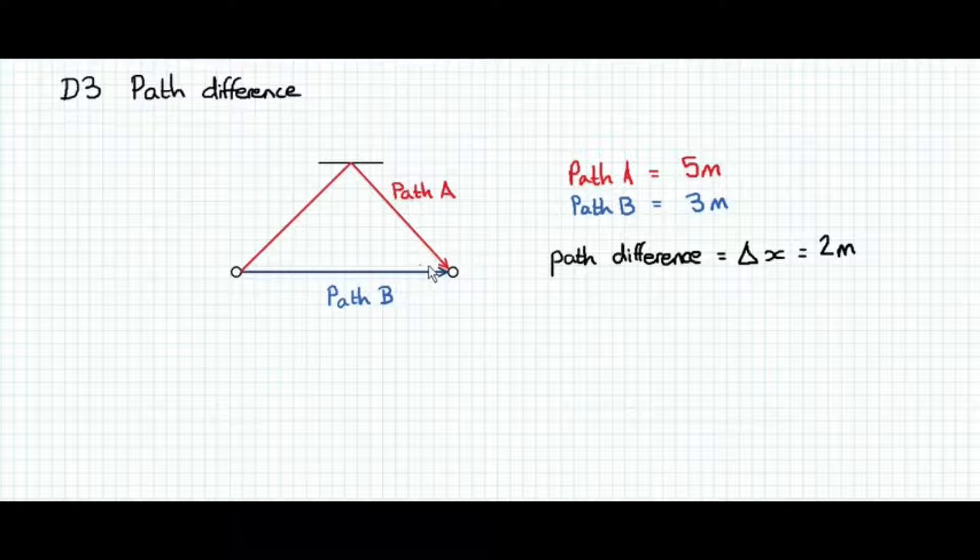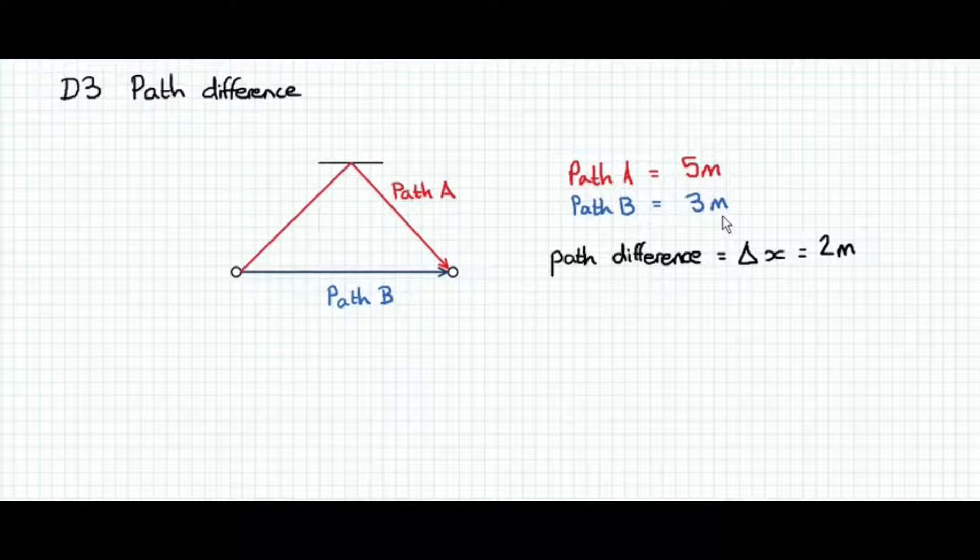In this particular situation, maybe path A is 5 meters long and path B is 3 meters long. A path difference would be the difference between those two path lengths, 2 meters.